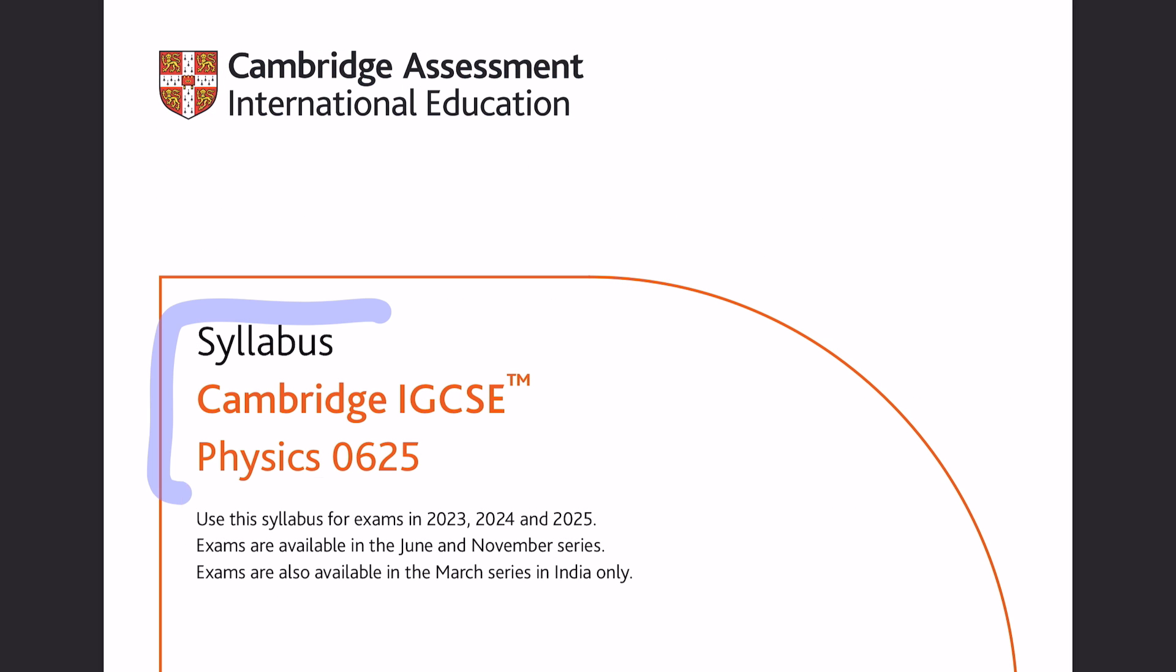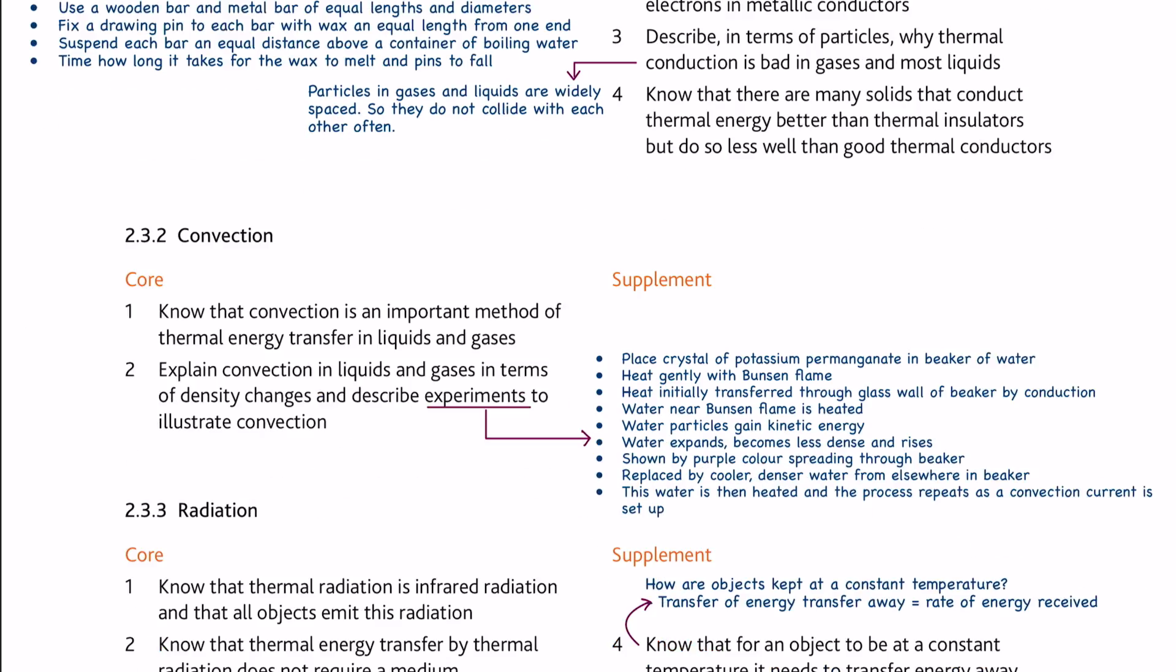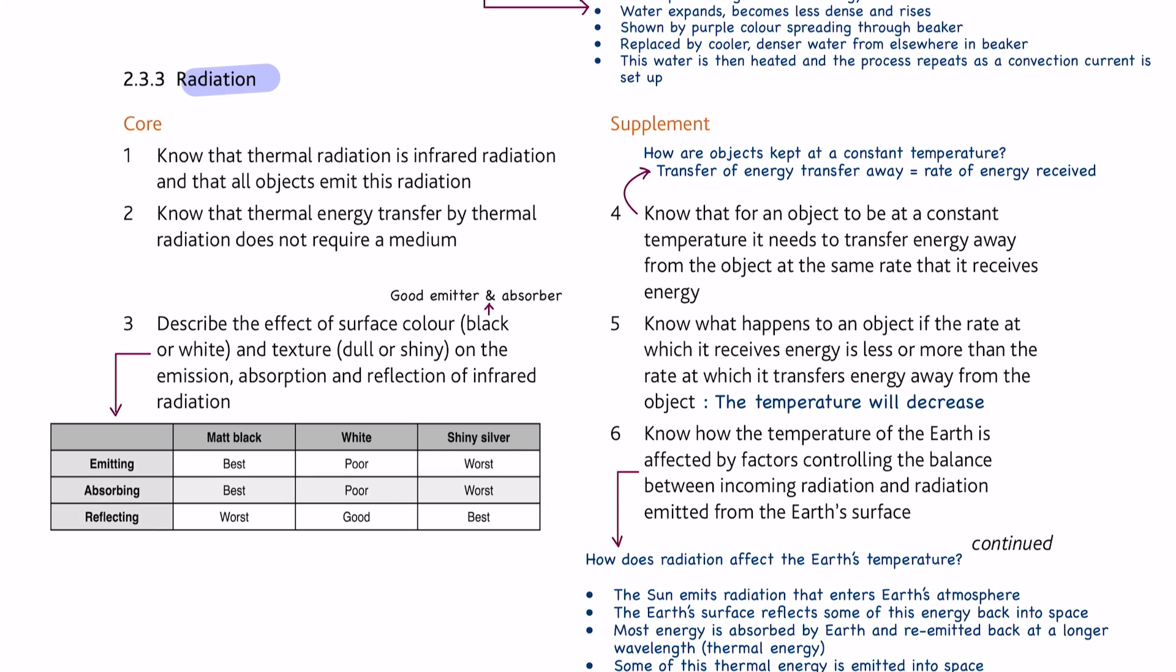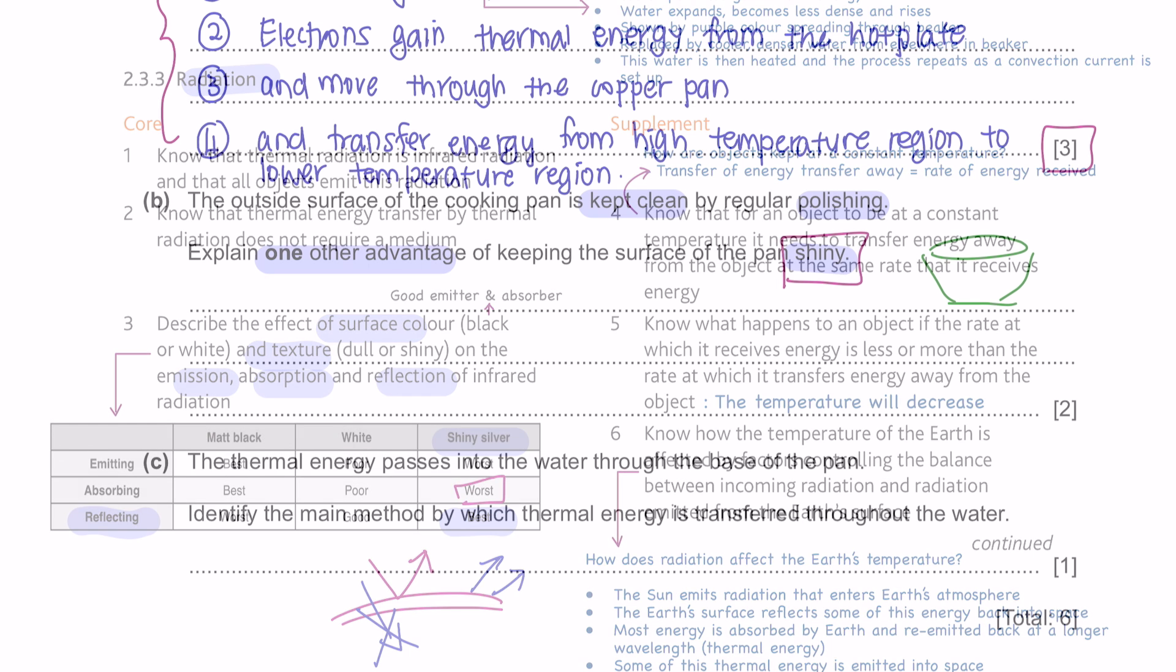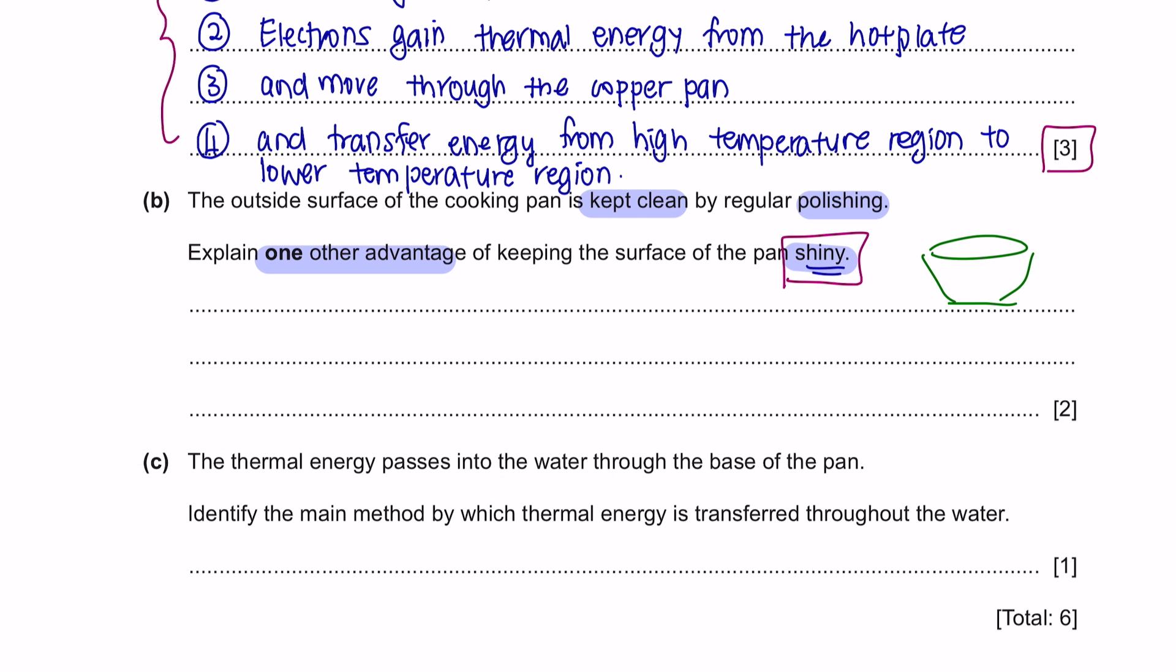Now, in your course syllabus for 2023-2025 examinations, under the transfer of thermal energy for radiation, it has been already mentioned to you that you should know the effect of surface color and texture when it comes to emission, absorption, and reflection of heat. And for a shiny surface, it is the best in reflecting heat. And it is the worst in absorbing heat or even emitting heat. So, the advantage of having the pan shiny here is that shiny surface is a poor emitter of heat. Therefore, any heat energy inside of the pan will not be lost from the pan to the surrounding.